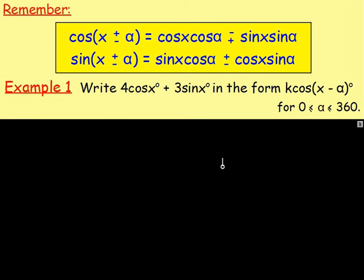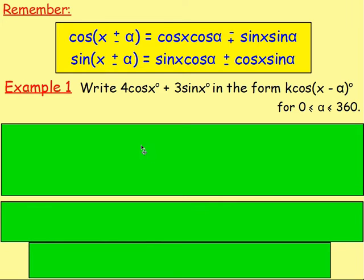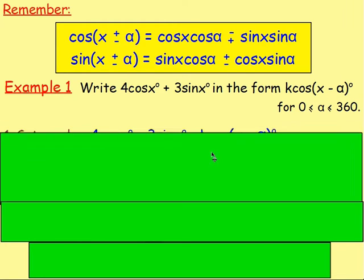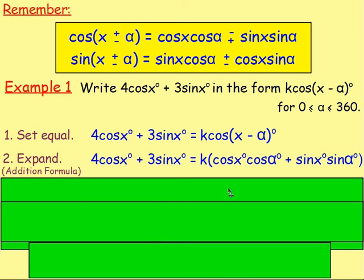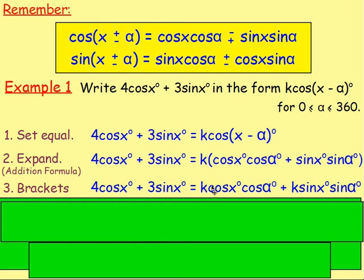Let's do a worked example. Example one: write four cos x plus three sin x in the form k cos x minus alpha, for alpha between 0 and 360 degrees. Set both sides equal: four cos x plus three sin x equals k cos x minus alpha. Expand the right-hand side using the addition formula — k cos(x minus alpha) expands to k times (cos x cos alpha plus sin x sin alpha), so multiplying through by k gives k cos x cos alpha plus k sin x sin alpha.